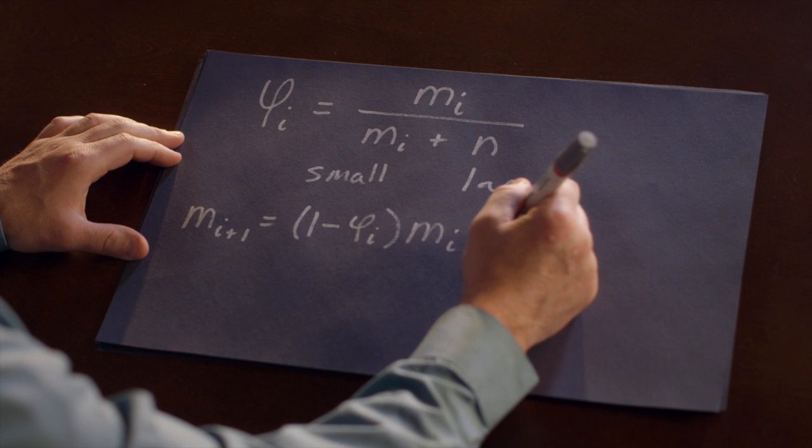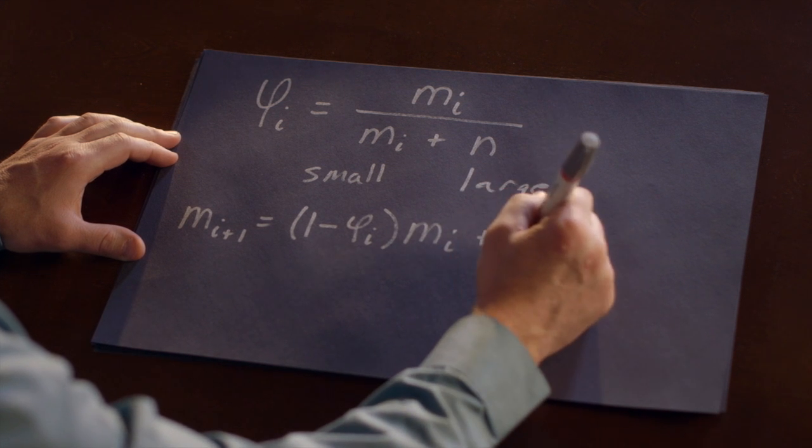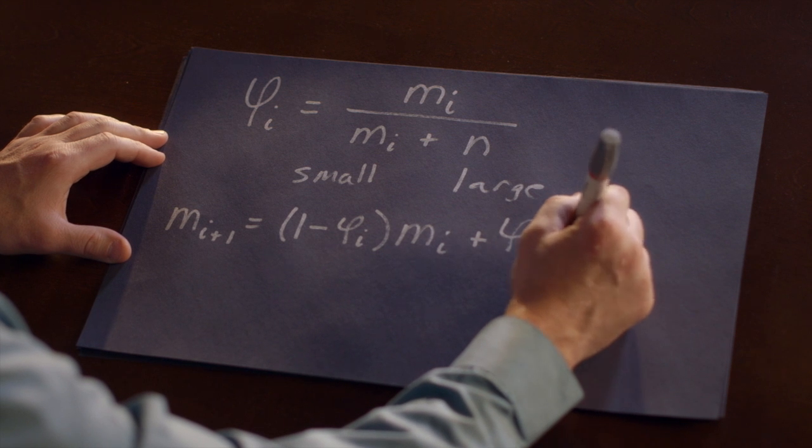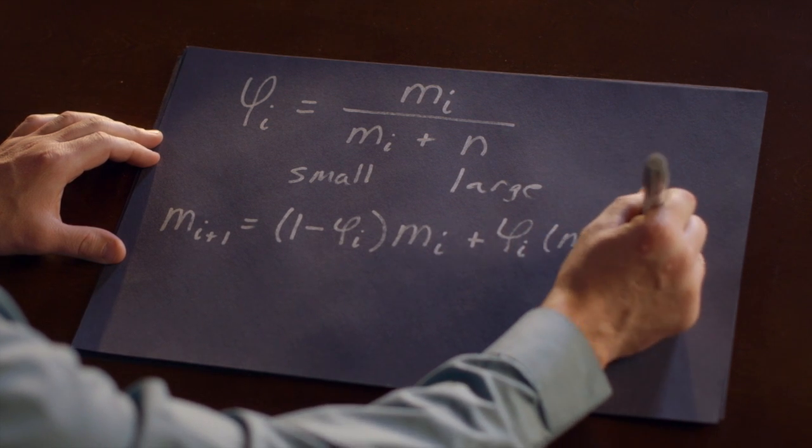Or it's possible with probability phi sub i that it fell into a small pore, thus it blocks that small pore, and the number of pores in the filter goes down by one.